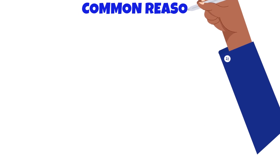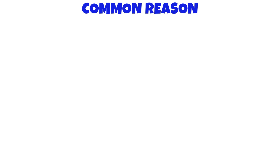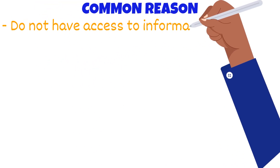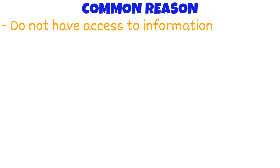Another common reason why producers may not always maximize their profit and why consumers might not always maximize their benefit is that they do not have access to all the information available. This could mean that a consumer might not know that a particular product can be purchased for a lower price in another location, so that consumer will not be able to maximize their benefit because they do not have the needed information.